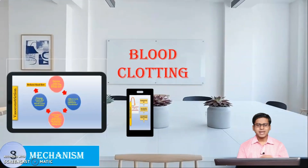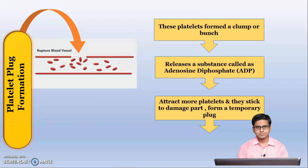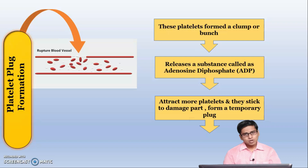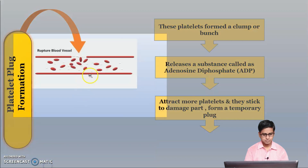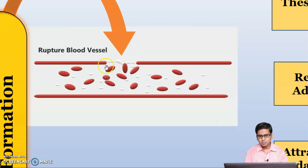The second stage is called platelet plug formation. These platelets form a clump or bunch and release a substance called adenosine diphosphate, that is ADP. This ADP attracts more platelets towards the damaged part. They come towards the part and stick to the damaged area. After sticking, they form a plug. As shown in the diagram, platelets stick to one another and form a plug, and after producing ADP they attract more platelets towards the damaged part to prevent further blood loss.